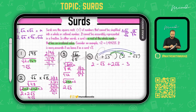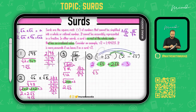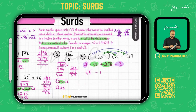To combine like surd terms, treat them like algebra. For example, just as -x + 2x = x, you collect the surd terms together. So (2 - 1)√3 = √3, and the constant terms give 2 - 3 = -1. That's how you simplify expressions with surds.